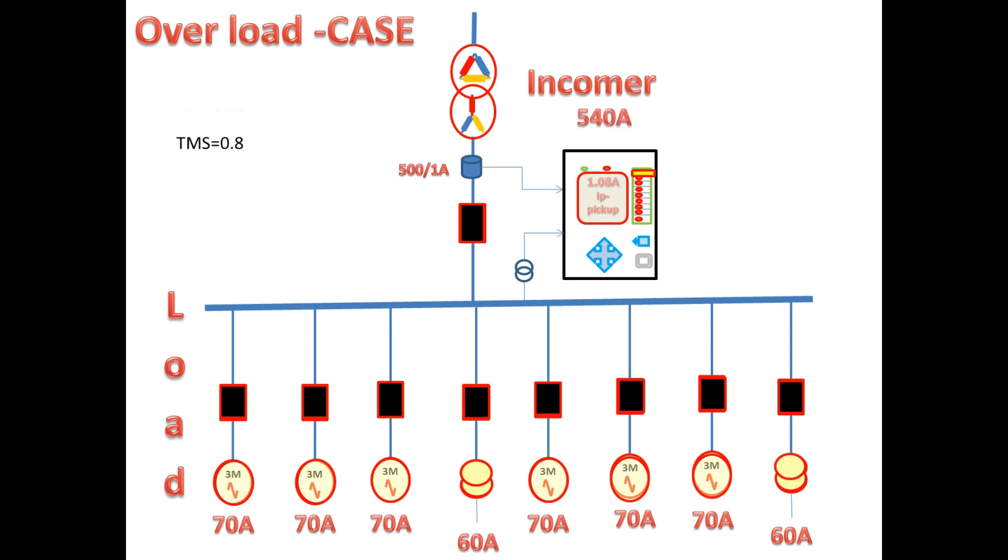Now we go for case 2. Here all the feeders are in overload so the overload current is very high. The actual current is 1.08 Amps. When you substitute in the formula, now the tripping time we get is only 12.55 seconds. Now the incomer will wait for only 12.55 seconds since the load current increased. After that it will give the tripping command to the incomer breaker.